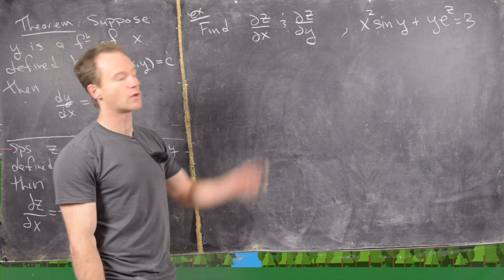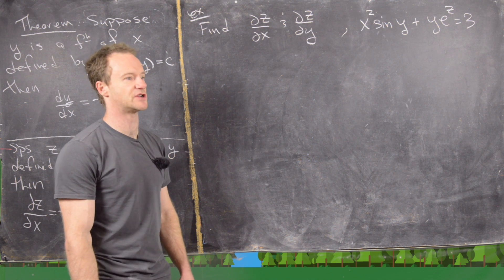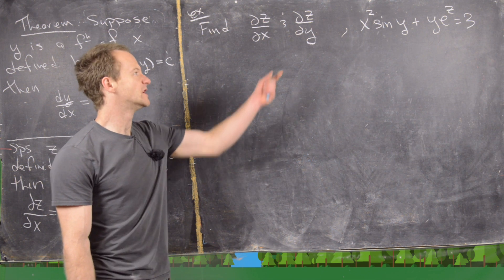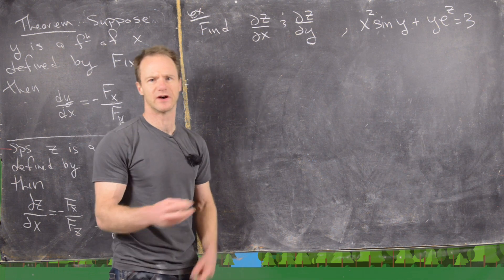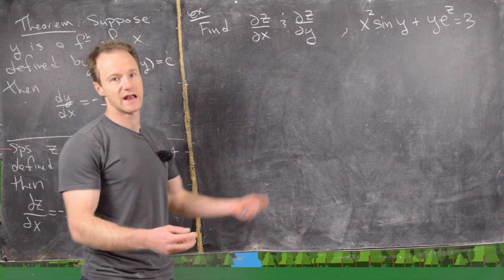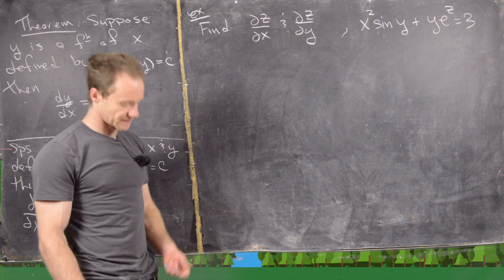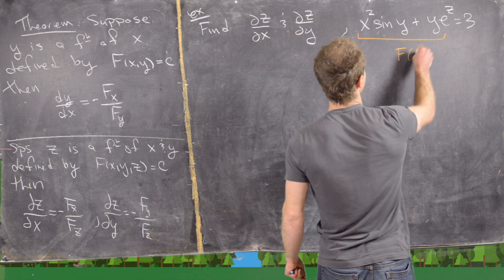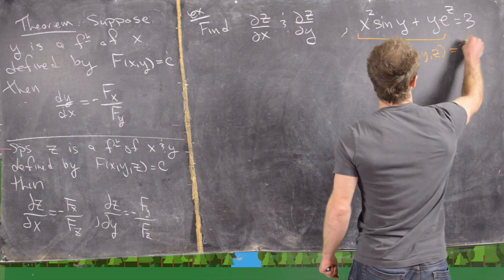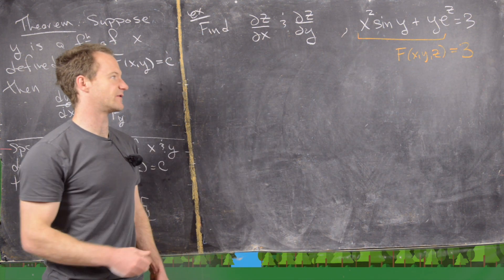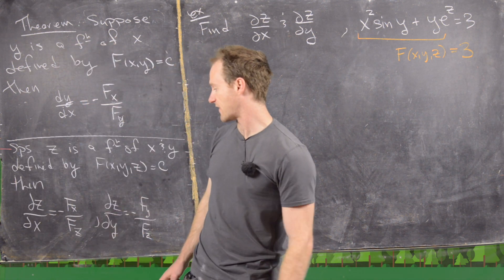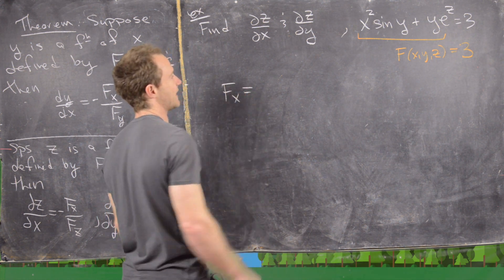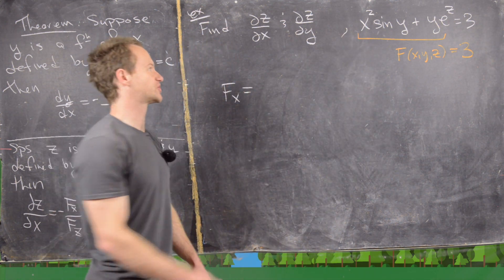For our last example, we want the partial derivatives for the equation that defines z implicitly as a function of x and y: x² sin(y) + y·e^z = 3. You could solve this for z using the natural log, but it's just as easy not to. Here this expression is our function F(x, y, z) = 3, defining z as a function of x and y. We need the partials of F with respect to x, y, and z.